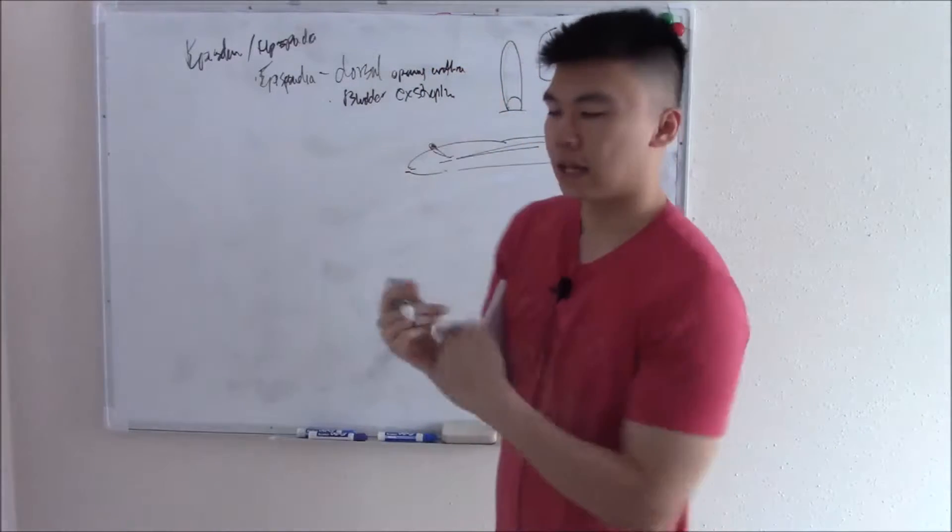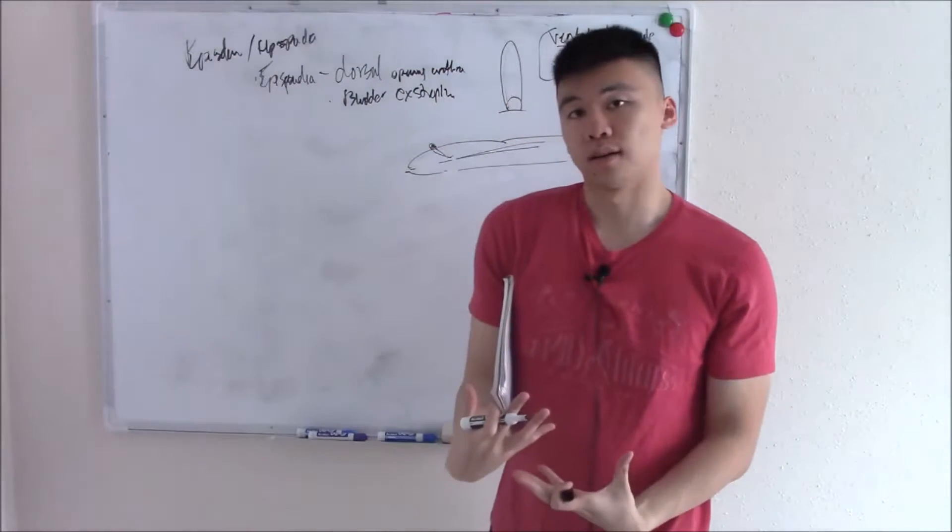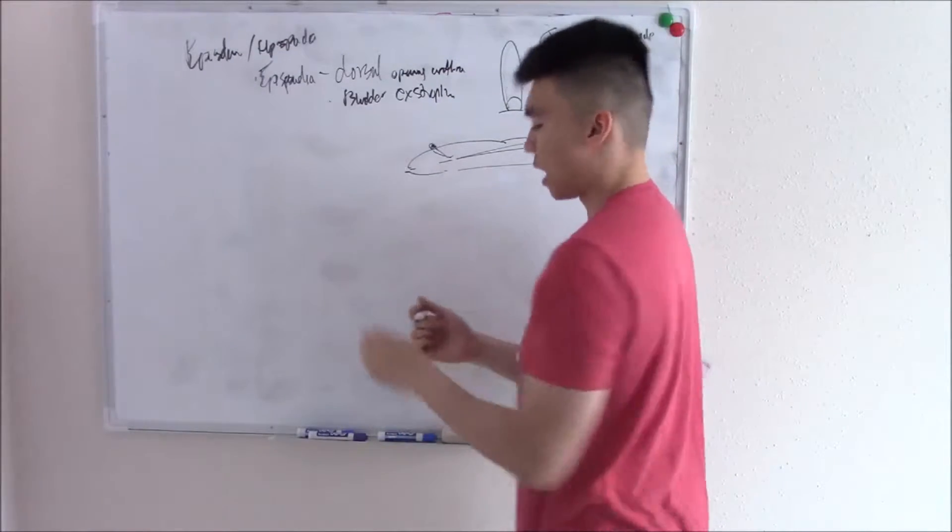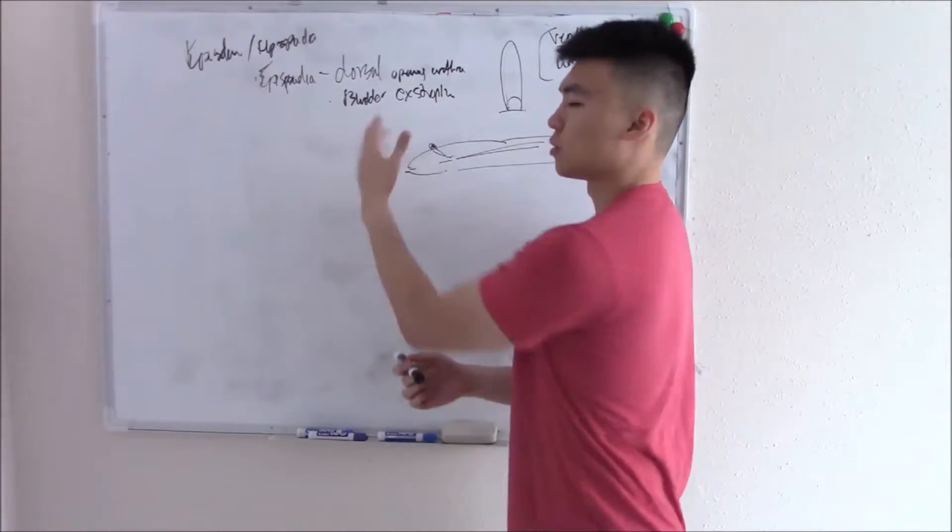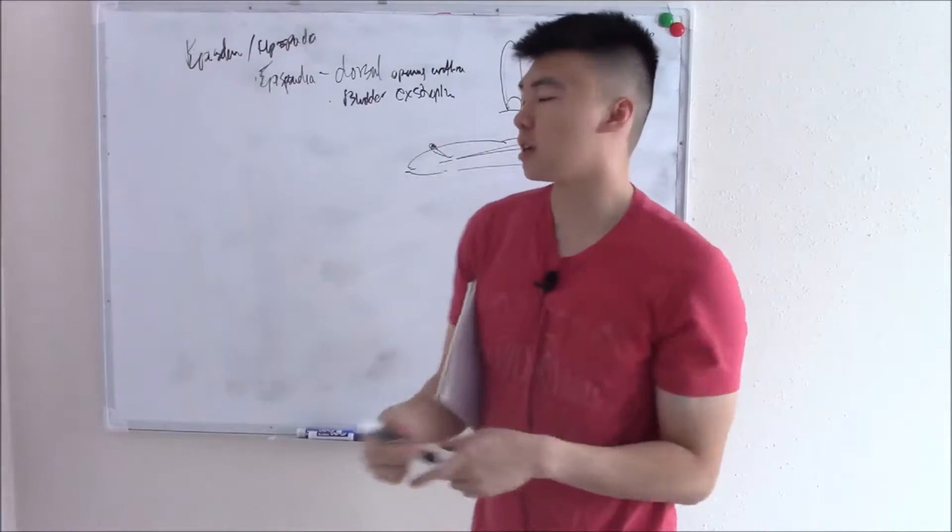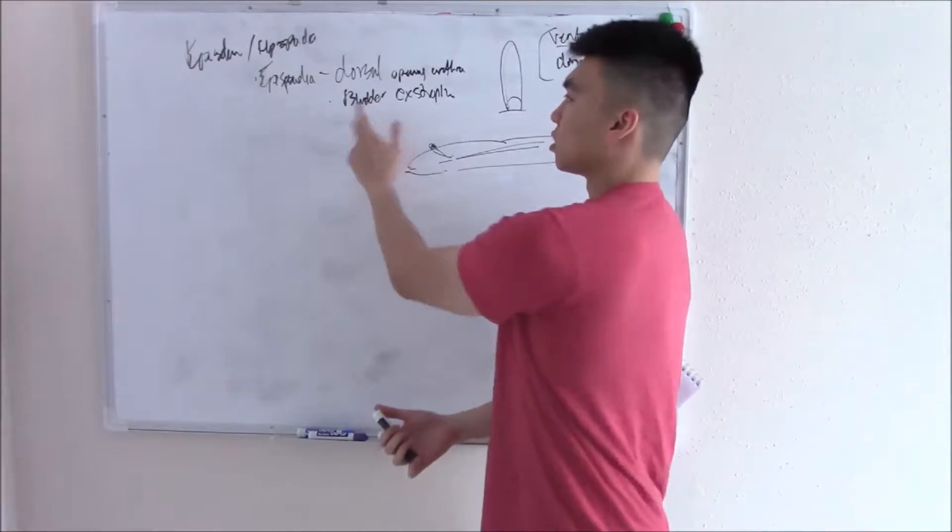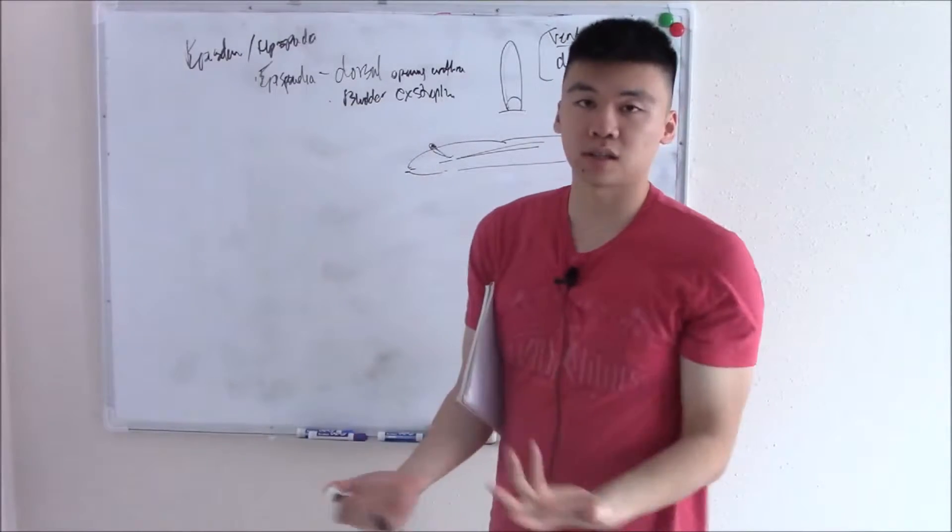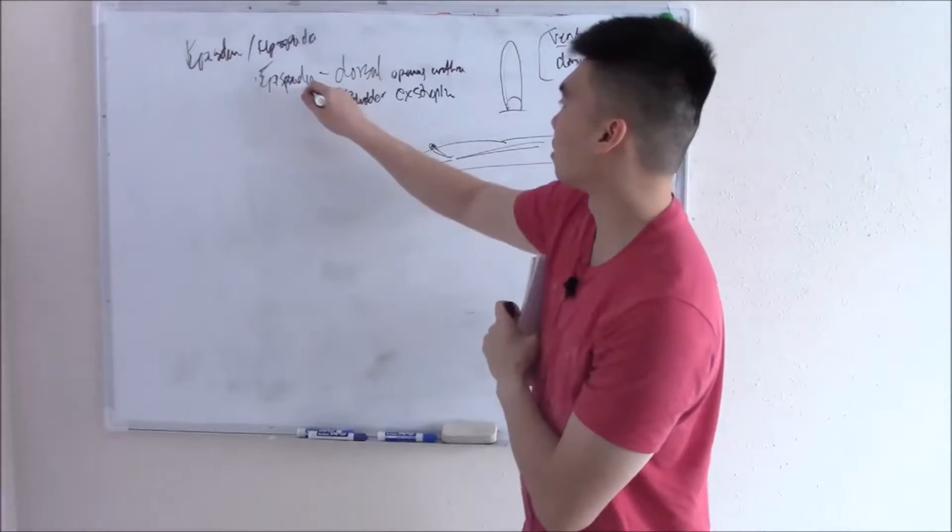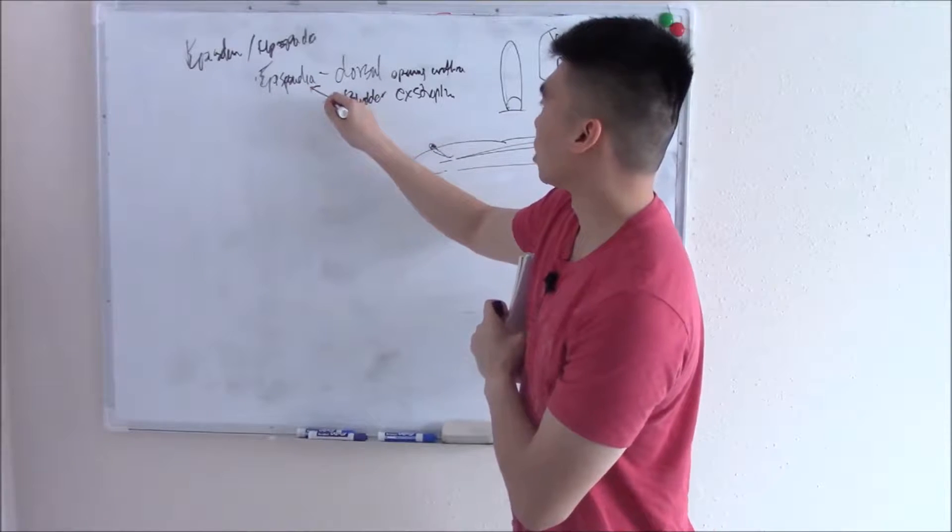It's associated with bladder exstrophy. What the heck is that? That's when the bladder is outside of your body. You can actually see the bladder outside and you're born with that. Every time we have an association we think of everything we know about that association. Fortunately for us nobody really knows why it's associated or what causes it in the first place. Just know that they're associated with each other.